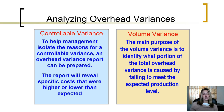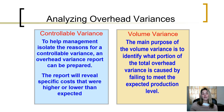Analyzing these variances: to help management isolate the reasons for a controllable variance, an overhead variance report can be prepared. This report will reveal where specific costs were higher or lower than expected. For a volume variance, the main purpose is to identify what portion of the total overhead variance is caused by failing to meet the expected production level.